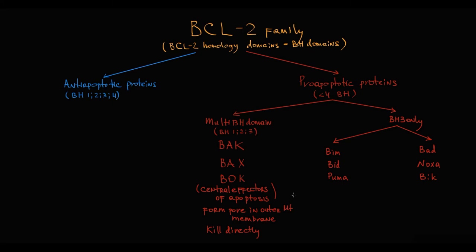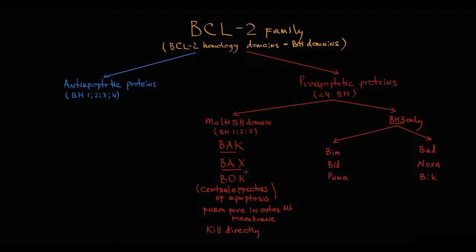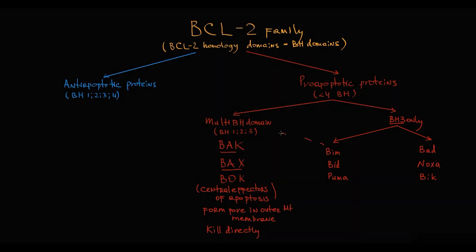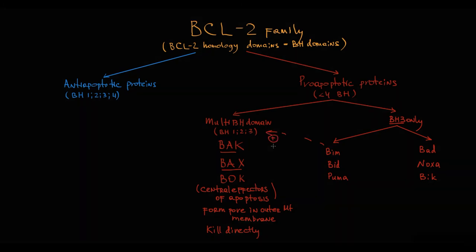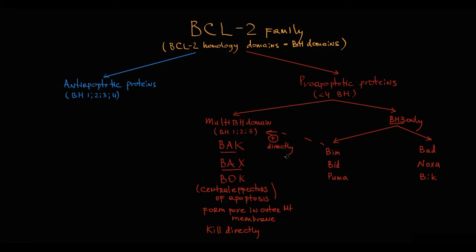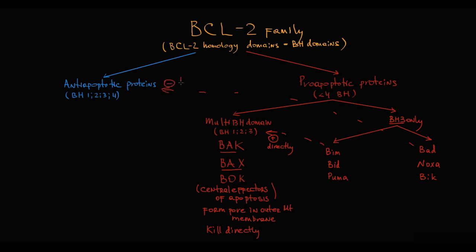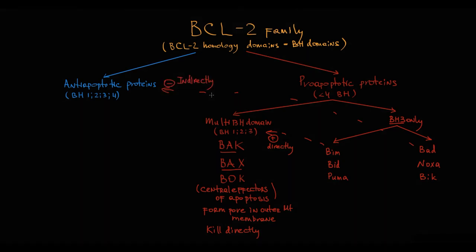In contrast, BH3-only proteins cannot kill mitochondria directly — they have only one BH3 domain, so they lack the power to do so directly. But they can help the multi-domain proteins, such as BAX and BAK, to do it. BH3-only proteins can either bind to multi-domain proteins and directly activate them, or they can help indirectly by inactivating anti-apoptotic proteins. Once they neutralize inhibitors of BAX and BAK proteins, the activity of multi-domain apoptotic proteins tremendously increases.